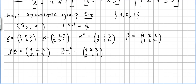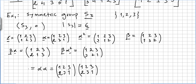The six elements are: the identity, alpha, alpha squared, beta, beta·alpha, and beta·alpha squared. The identity takes 1 to 1, 2 to 2, 3 to 3. Alpha takes 1 to 2, 2 to 3, 3 to 1. Applying alpha twice gives alpha squared: 1 goes to 3, 2 goes to 1, 3 goes to 2.